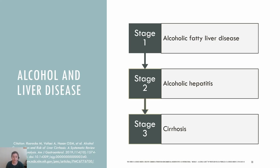symptoms can include vomiting, jaundice, fever, and pain. This stage is also reversible if the individual abstains from alcohol permanently. The final stage is cirrhosis, where the liver becomes significantly scarred and the liver cells lose their function. This stage is generally not reversible, and liver failure can develop. Abstinence from alcohol is crucial to stop any further damage.